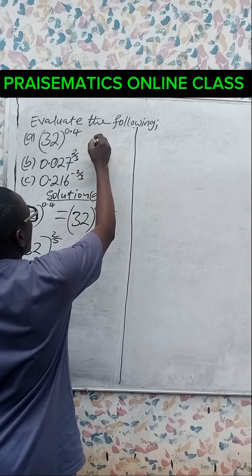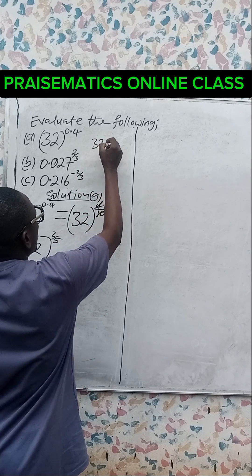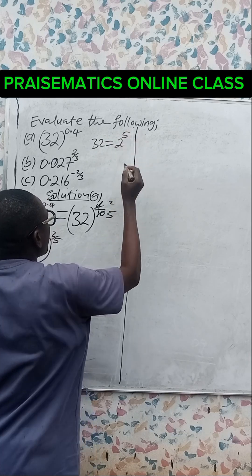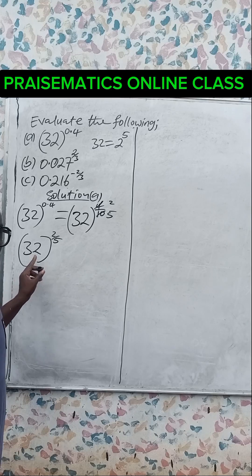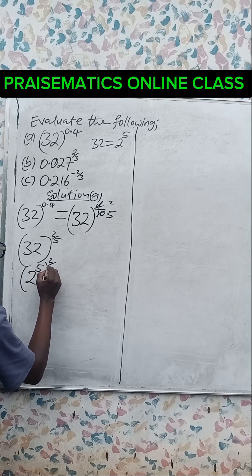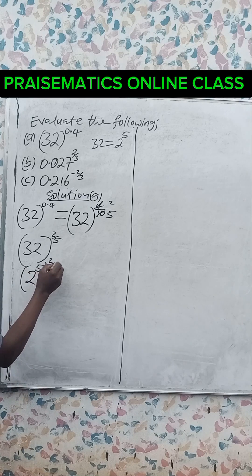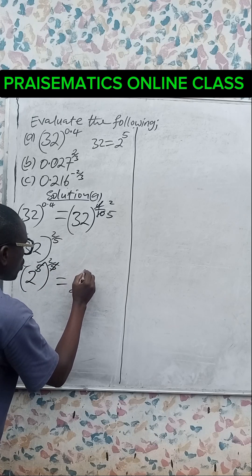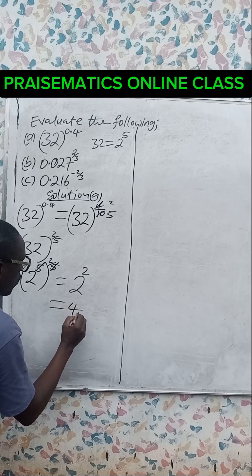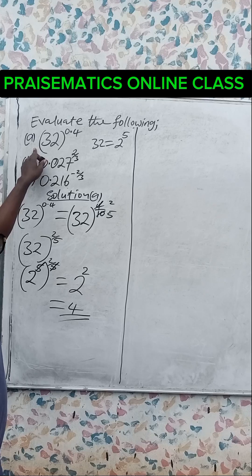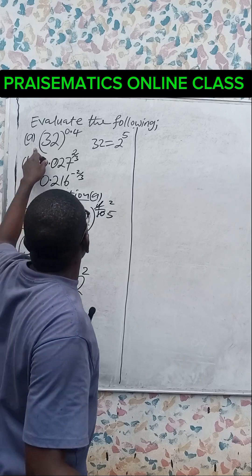Now, recall that the index form of 32 is the same thing as 2 raised to the power 5. So we have 2 raised to the power 5, raised to the power 2 over 5. This 5 will cancel this 5, and we are left with 2 raised to the power 2. And 2 raised to the power 2 is 4. So 4 is the answer to question A.